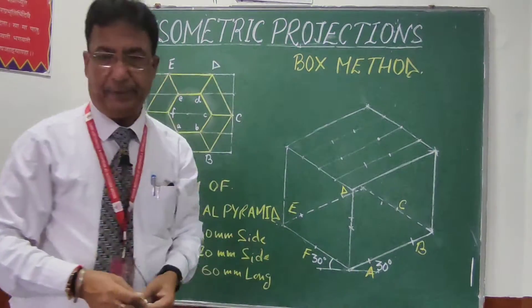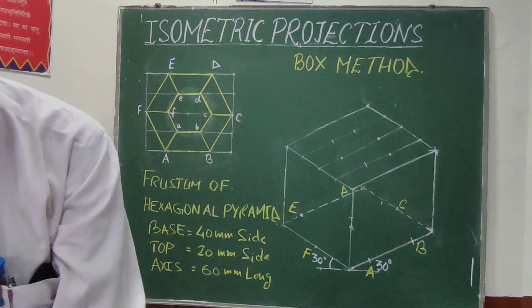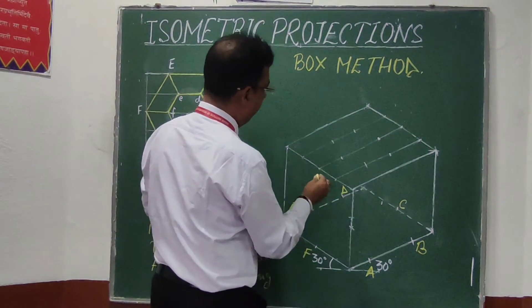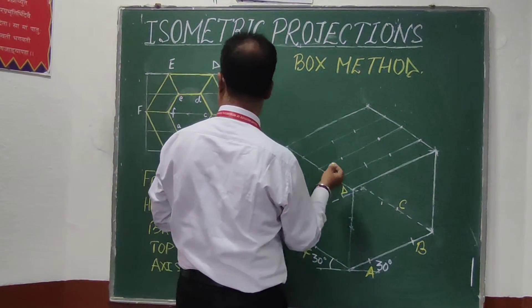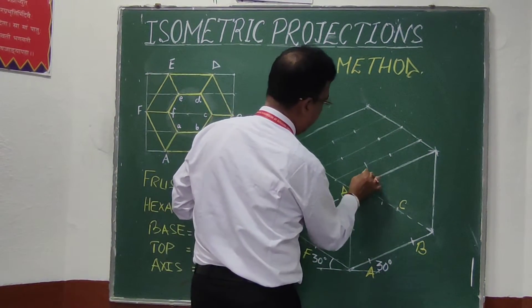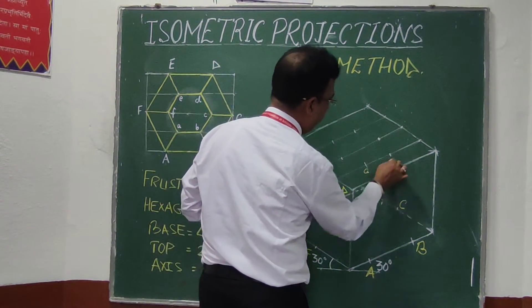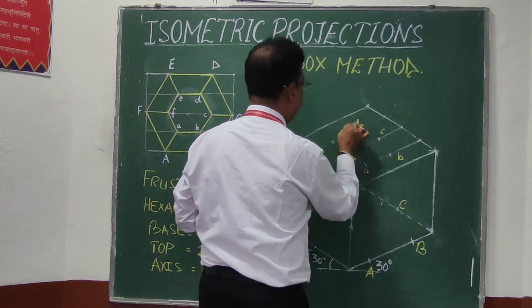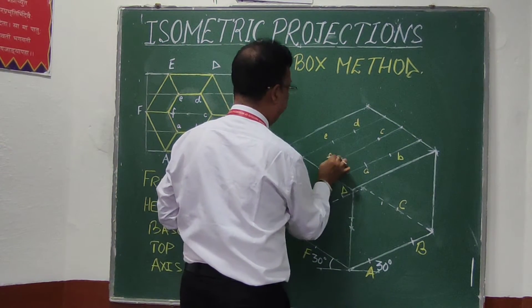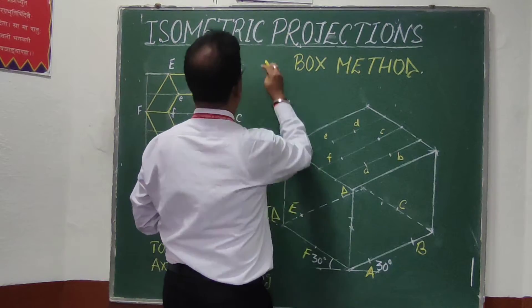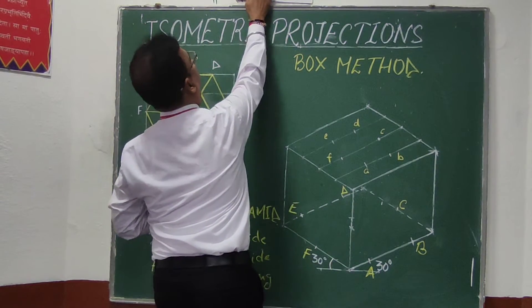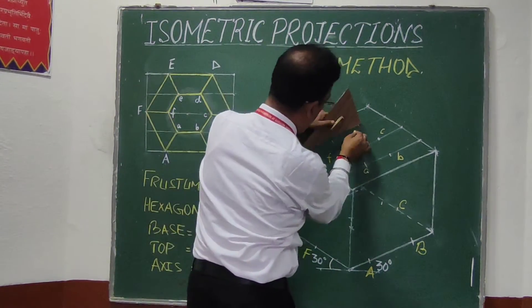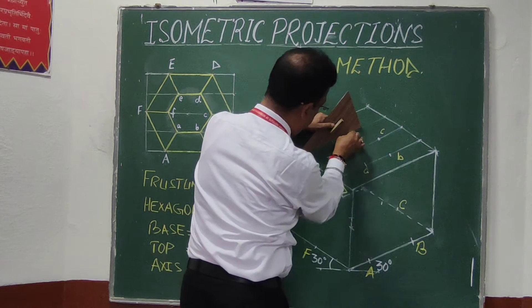Now I have all six points on the top face as well. I can name these points: small a, b, c, d, e, and f. Now I join these points — joining d with e first.